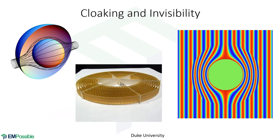One of the most famous metamaterial achievements is invisibility cloaking from Duke University. To render an object invisible, a wave approaching the object must bend around it and come out with a wave front perfectly in phase — so you can't tell anything was there. The required extreme values of permeability and permittivity are only achievable through metamaterials. Duke University's actual cloak featured a periodic arrangement of little metal elements — the first ever invisibility cloak.